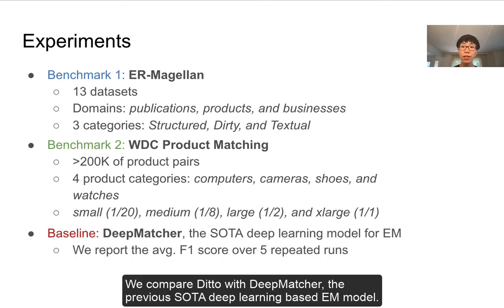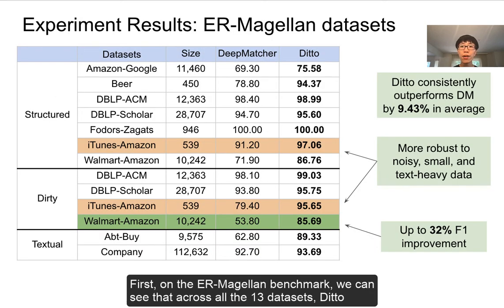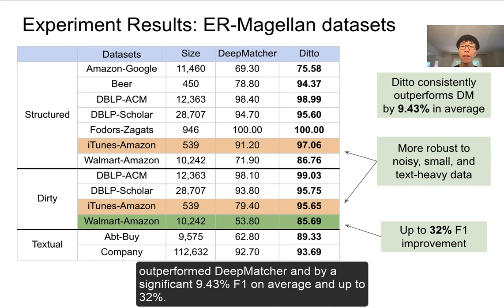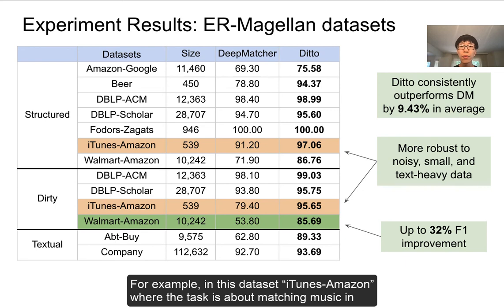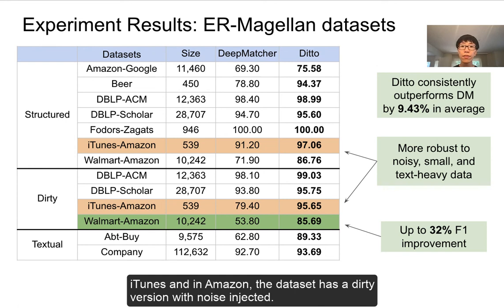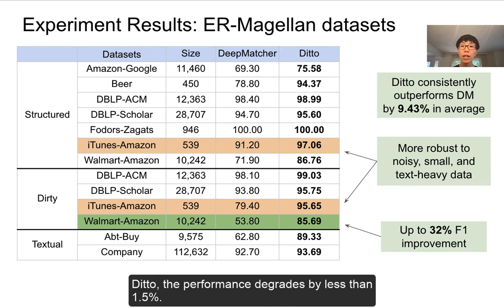We compare DITTO with DeepMatcher, the previous state-of-the-art deep learning-based entity matching model, and report the average F1 score over five repeated runs. On the ER-Magellan benchmark, across all 13 datasets, DITTO outperformed DeepMatcher by a significant 9.43% F1 on average and up to 32%. DITTO is particularly strong on datasets that are small, noisy, or text-heavy. For the iTunes-Amazon dataset, the dirty version shows DeepMatcher's performance degrades by over 10%, while DITTO's performance degrades by less than 1.5%.